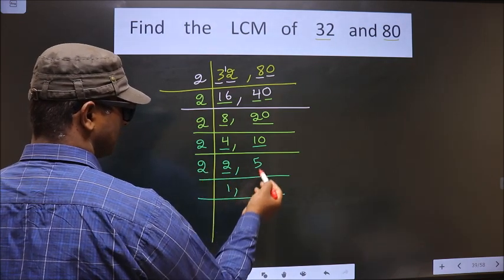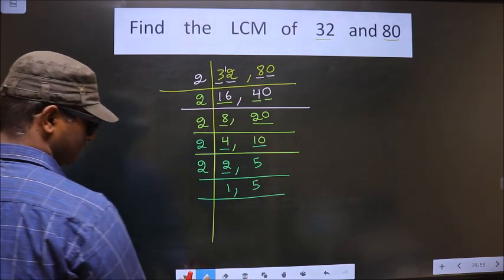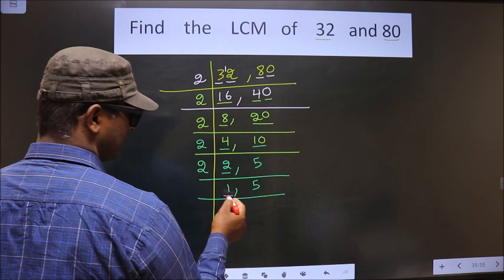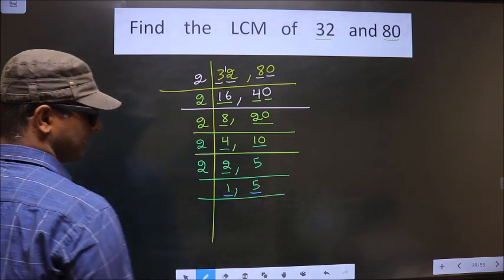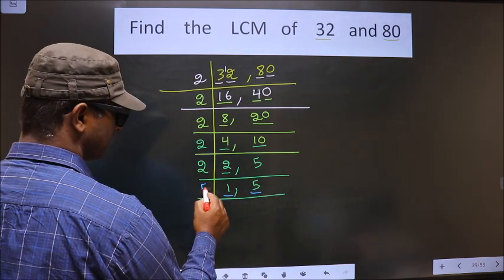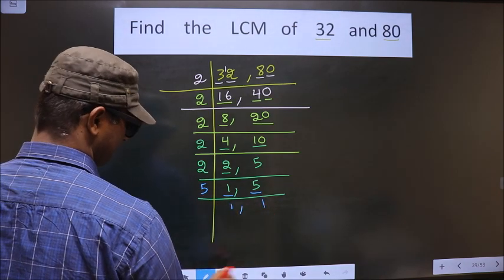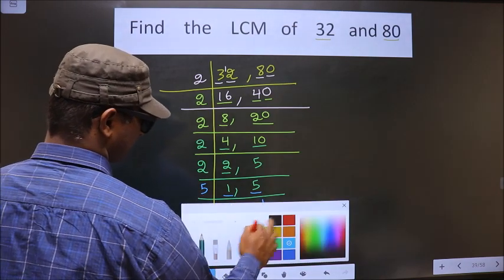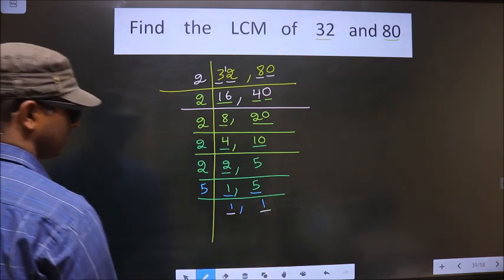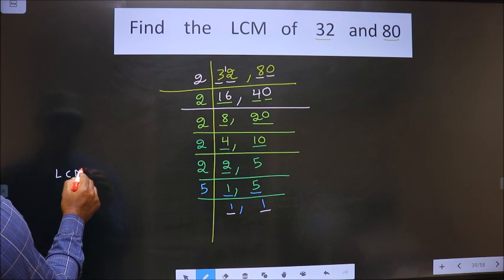5 is not divisible by 2, so you write down 5 as it is. Now here we got 1, so focus on the next number, which is 5. 5 is a prime number, so we take 5 here — 5 ones 5. Now we got 1 in both places, so now our LCM is ready.